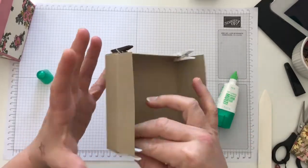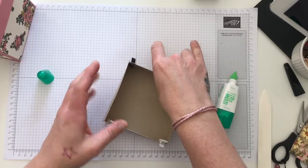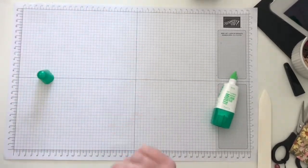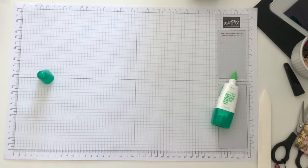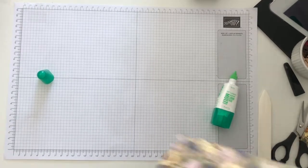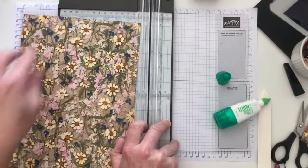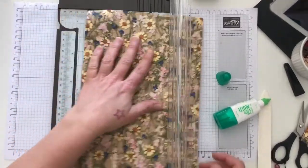And add in a peg. Now I'm just going to give that a couple of minutes just to go off. And what I'm going to do is we're going to cut our DSP now for our sides of our box, which you need four pieces, 10cm by 10cm.